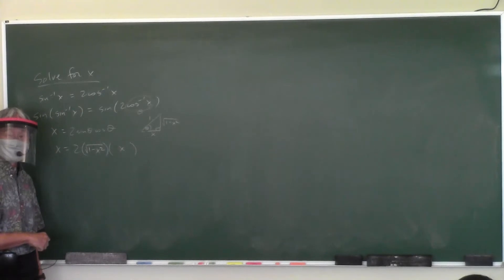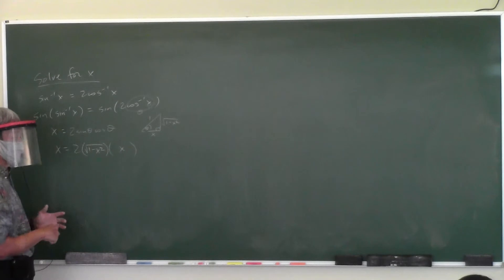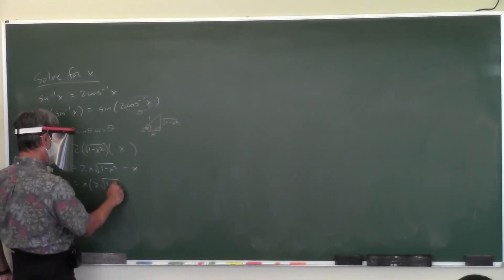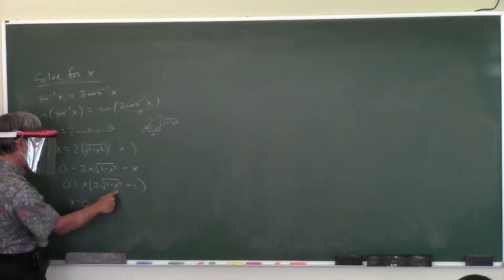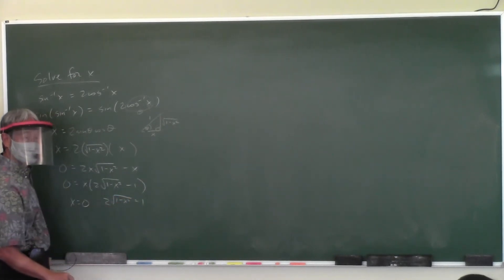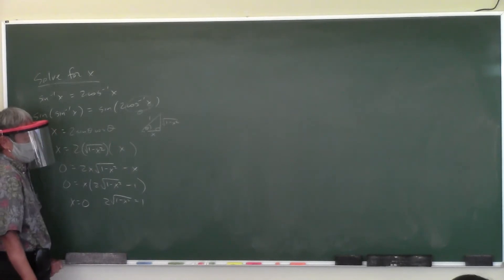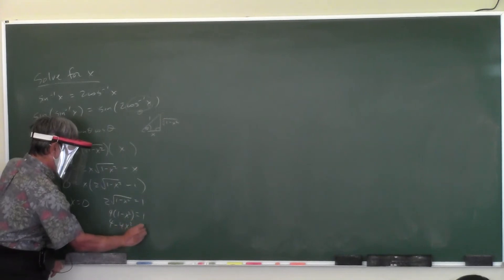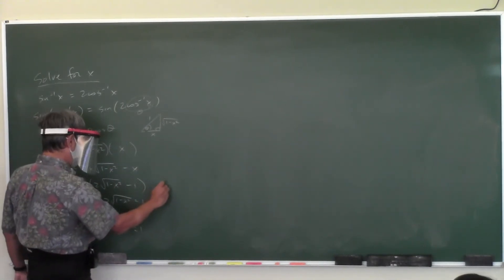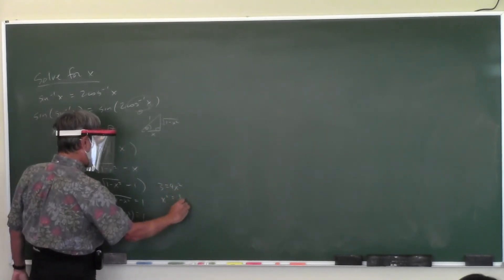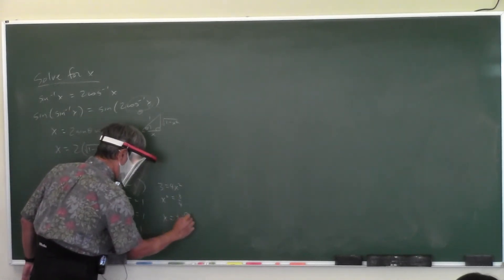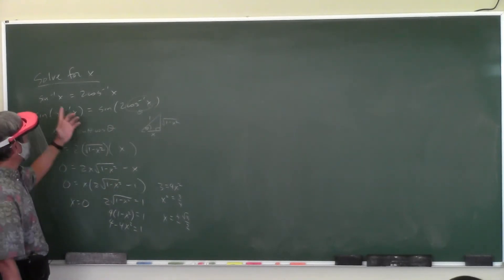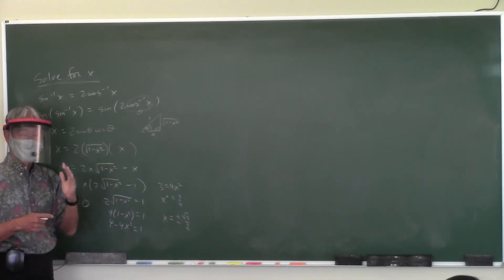What should I do? Don't cancel the x from both sides — you lose solutions when you cancel. Make one side zero, then factor out the x. So either x = 0, or 2√(1−x²) = 1. To solve that, square both sides: 4(1−x²) = 1, so 4 − 4x² = 1, then 3 = 4x², so x² = 3/4. Therefore x = ±√3/2. There are three candidate answers.